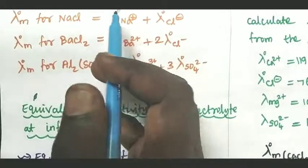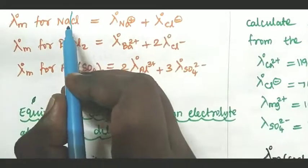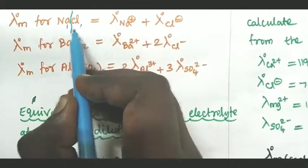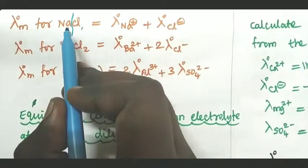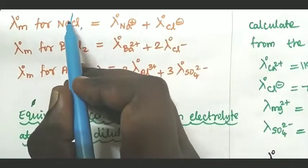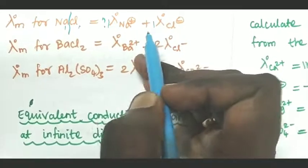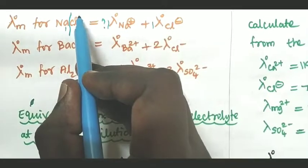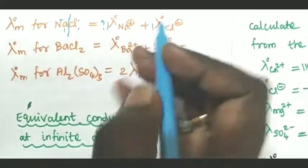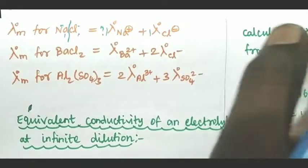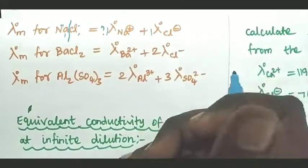For example, sodium chloride: the first ion is Na⁺ (cation) and the second is Cl⁻ (anion). How many ions are there? For NaCl, the number of sodium ions is 1 and the number of chlorine ions is 1. So Na⁺ has a coefficient of 1 and Cl⁻ has a coefficient of 1.